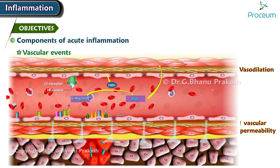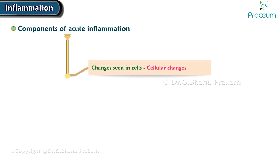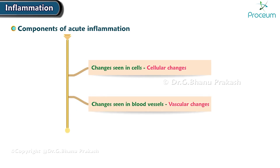Now let's talk about the components that contribute to acute inflammation. The changes seen in inflammation in cells are known as cellular changes, while changes seen in the blood vessels are called vascular changes.